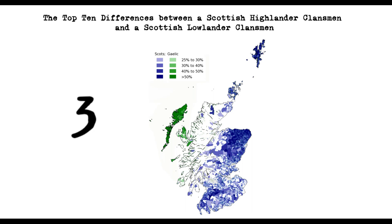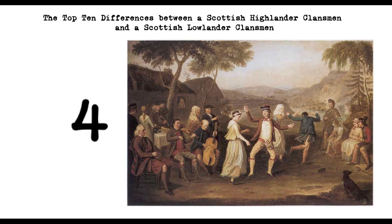4. Dress and Appearance. Highlanders wore distinctive tartan kilts and plaids, while Lowlanders dressed more like their English neighbours, with less colourful clothing.